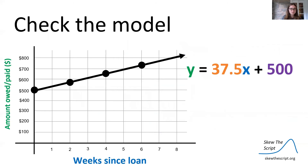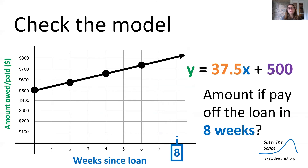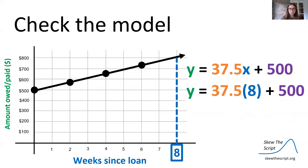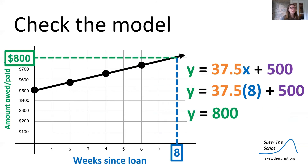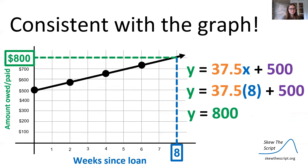Let's check the model we've just created and see if it matches our line. Let's figure out the amount we pay if we pay off the loan in eight weeks. Plug in 8 for x: y equals 37.5 times 8 plus 500. 37.5 times 8 is 300, plus 500 is $800 — and that lines up perfectly with our linear graph, consistent with the graph.